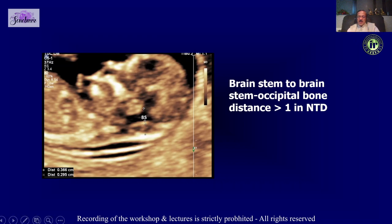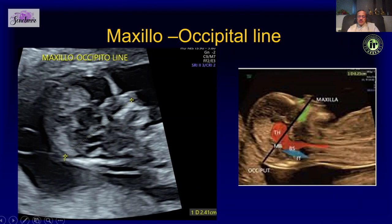We can also look at the maxilooccipital line — from the palate you draw a line to the occiput. Under normal circumstances the junction between the thalamus and the midbrain lies above this line. Whenever there is herniation of the posterior structures, this junction goes below this line — another sign of open neural tube defect.